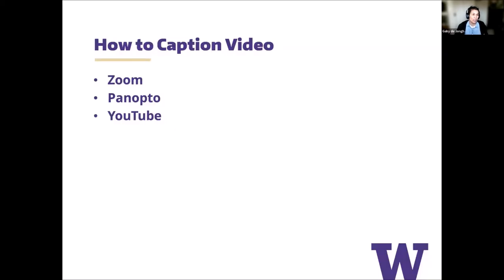I'm going to cover captioning in Zoom, Panopto, and YouTube — the three main video services we use at the UW. I'll talk about how to enable automatic speech recognition (ASR) captions, but it's important to note that ASR captions may not be accurate enough to serve as an accommodation. ASR captions lack the ability to convey context, sometimes mislabel speakers, and technical, medical, legal, and other specialized terms are often not transcribed accurately.